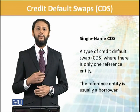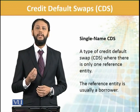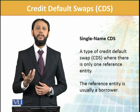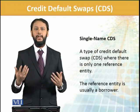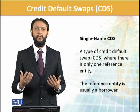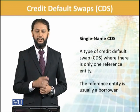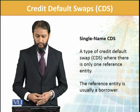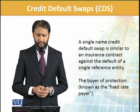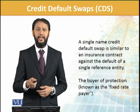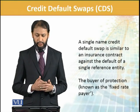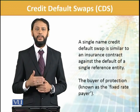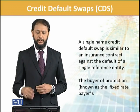Now, on what can a credit default swap be applied? It can be on a single instrument — for example, a bond of Mobilink, PTCL, or any international entity. It could be on one particular reference entity. Single name CDS is similar to an insurance contract — you lock in at a fixed rate structure for what you get out of it.